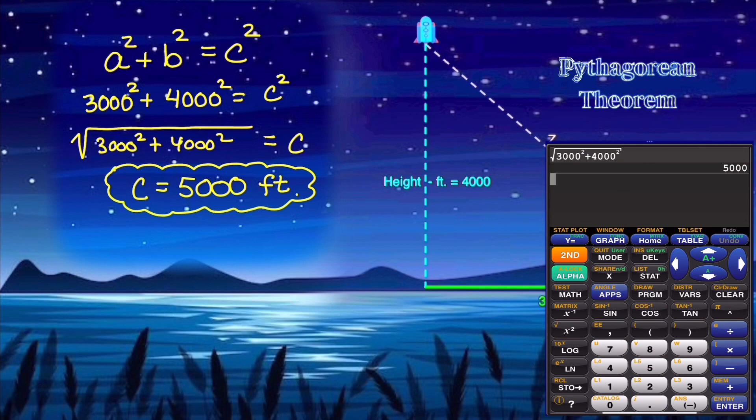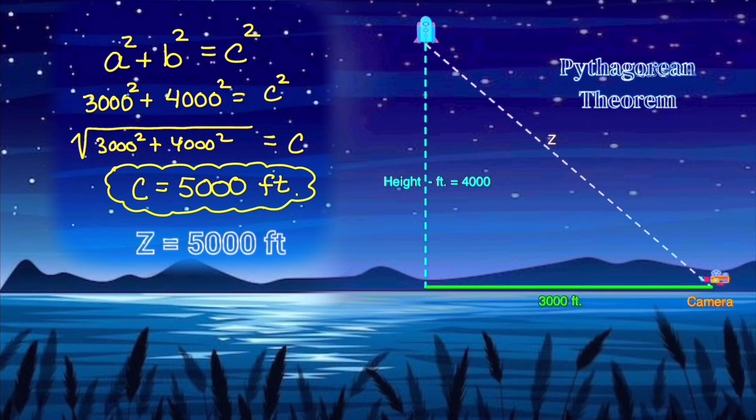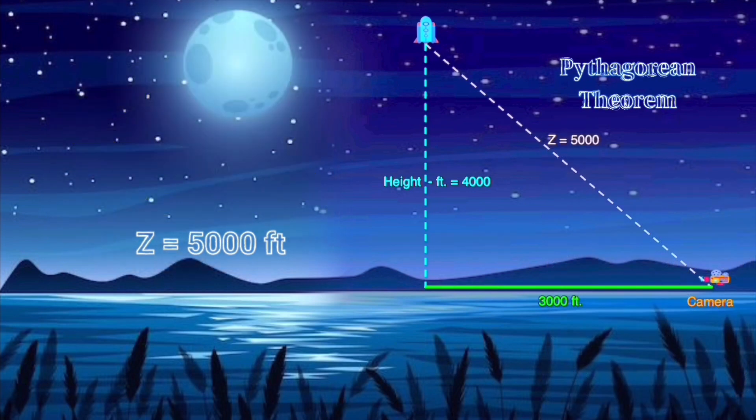And c works out to be 5,000 feet. Or in the context of our problem, z, the distance from the camera to the rocket, is 5,000 feet. Level one complete.